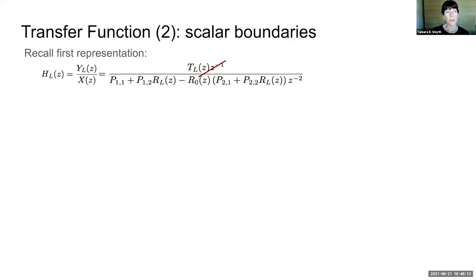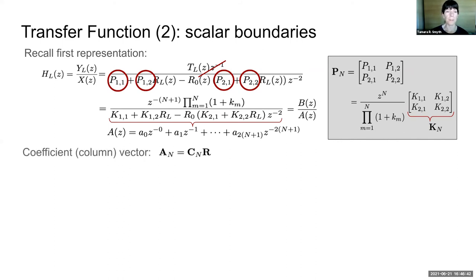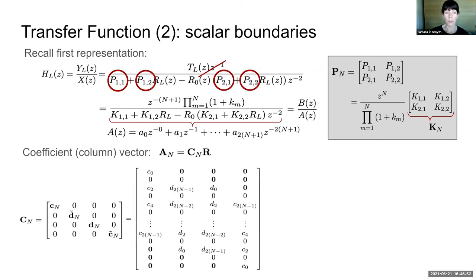The transfer function then for scalar boundaries is obtained by taking our first representation and making the substitution of the values for the K matrix to obtain a transfer function where the denominator is a polynomial. The numerator is simply a delay term and a scalar showing that this is an all-pole filter consistent with LPC theory. This coefficient vector is obtained by taking this product where the matrix C sub n is constructed using the coefficient vectors C and D.